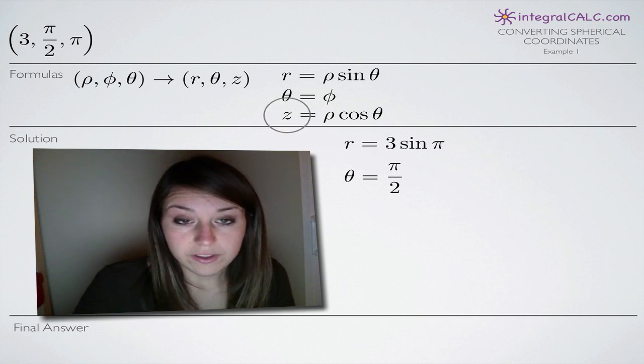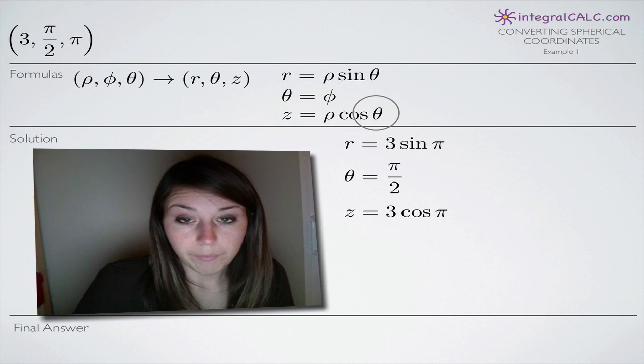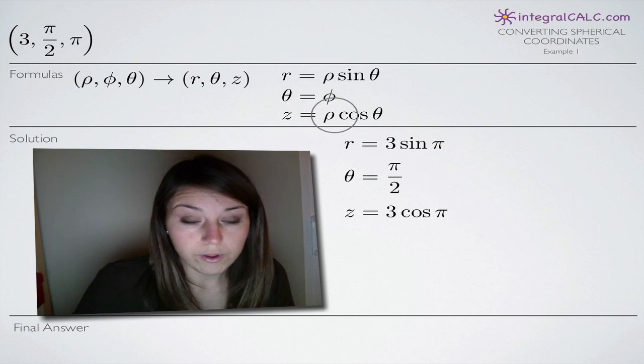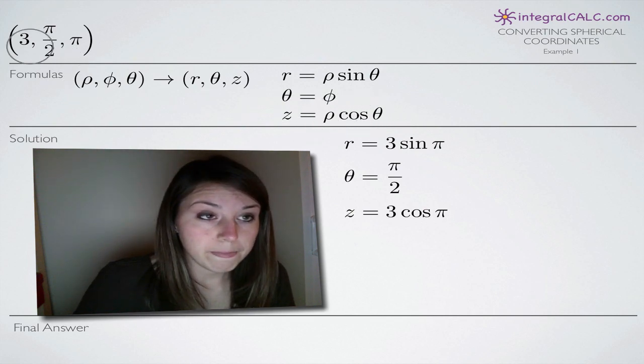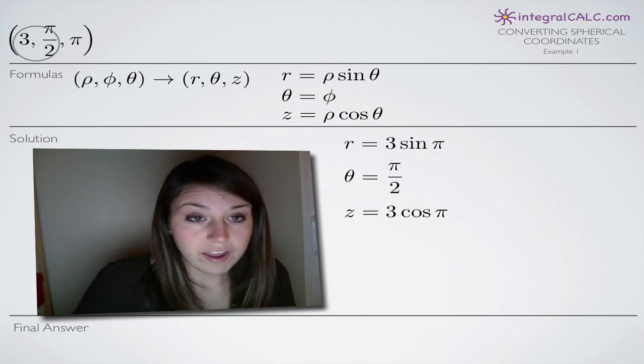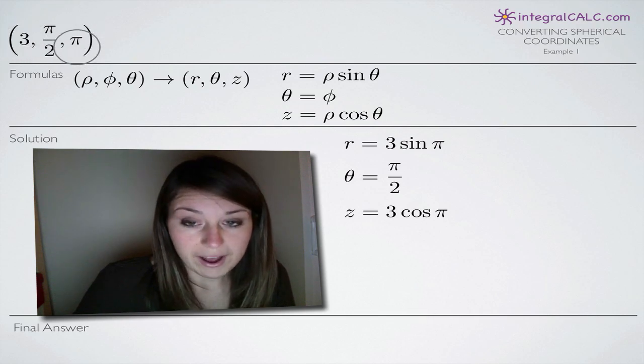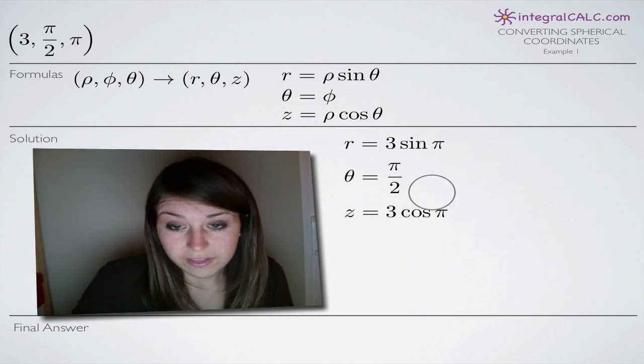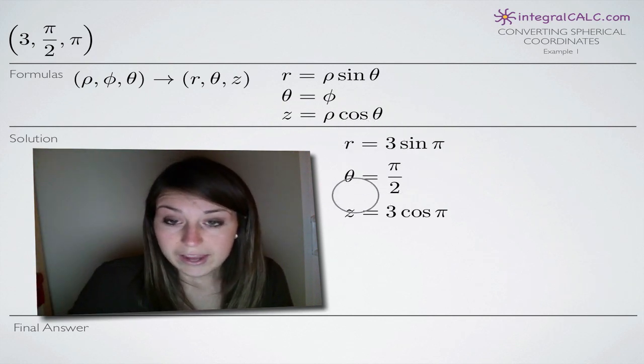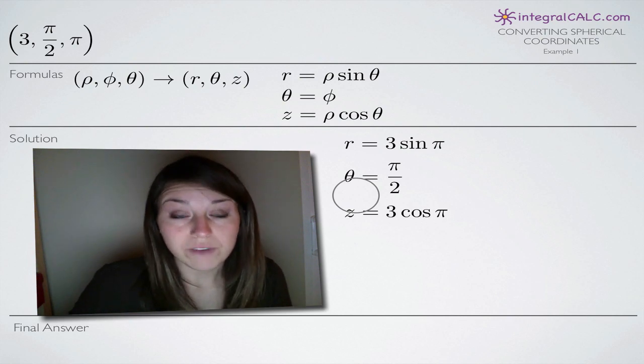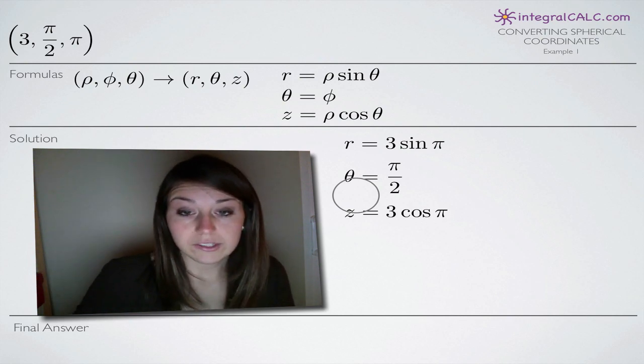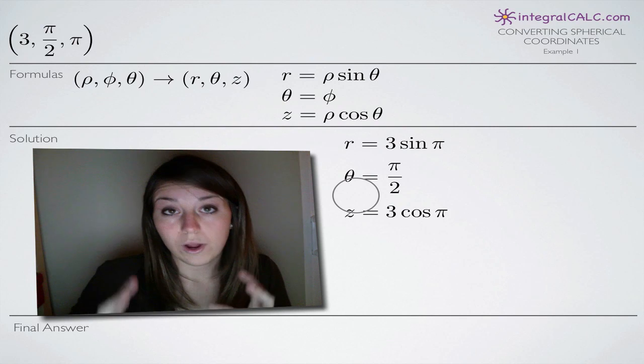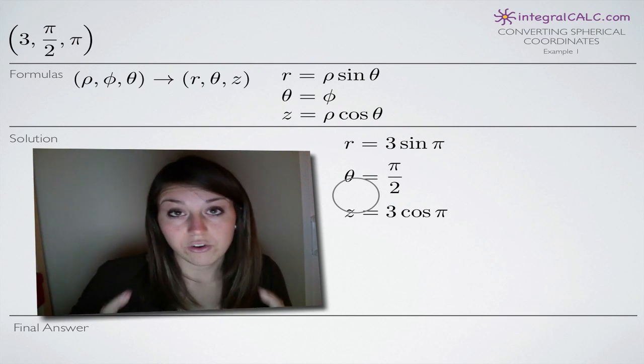So we set up that equation. And then to set up z, we say z equals 3 cos π, because we grab ρ from our original coordinate as 3 and θ from our original coordinate as π. So we just put those variables into these formulas and set these three up like this.